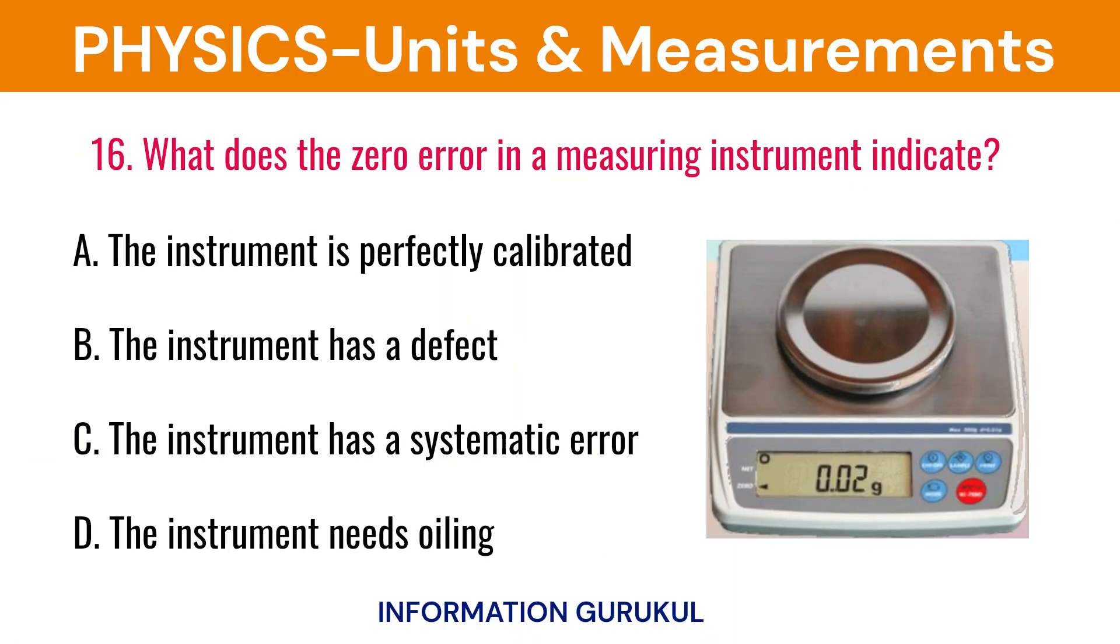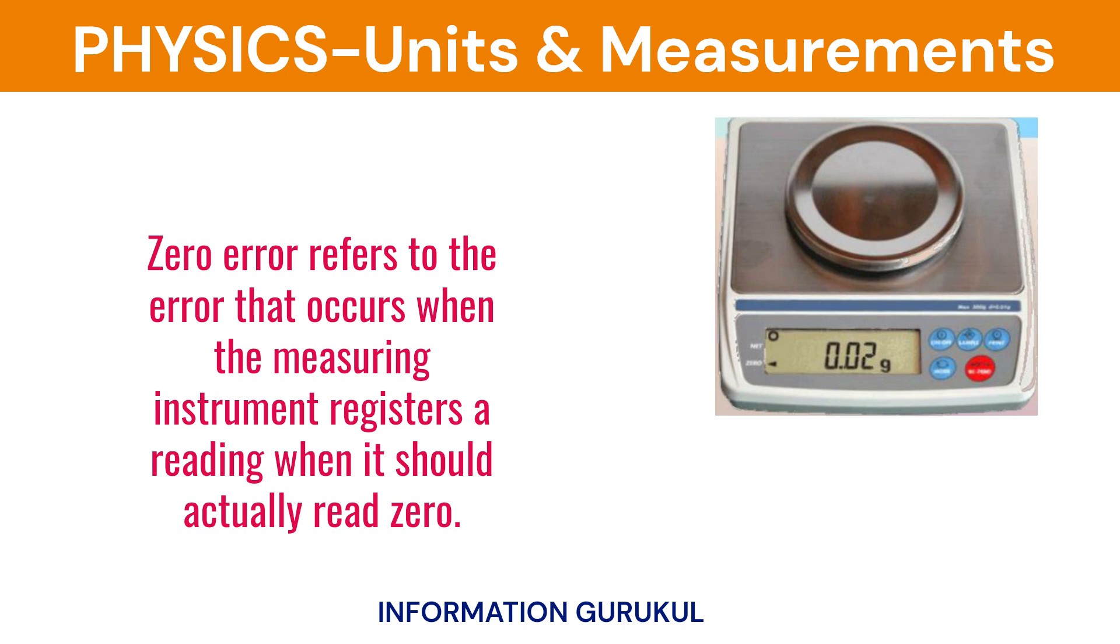What does the zero error in a measuring instrument indicate? The instrument has a systematic error. Zero error refers to the error that occurs when the measuring instrument registers a reading when it should actually read zero.